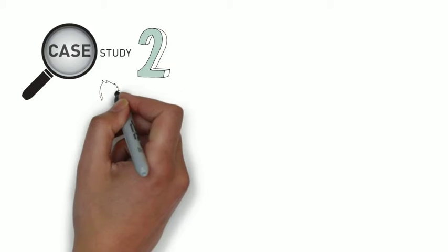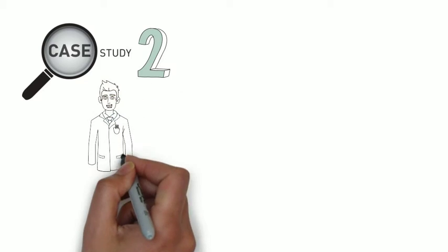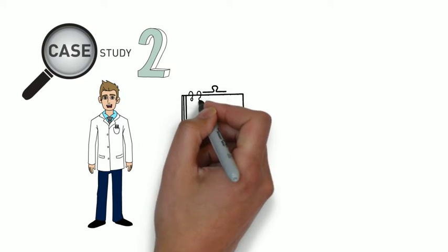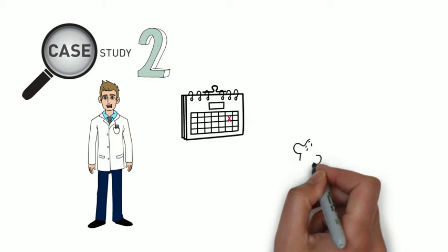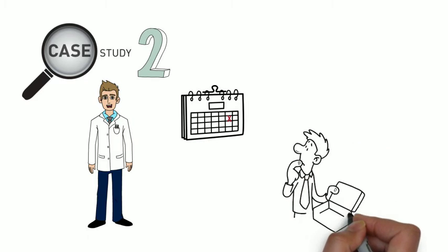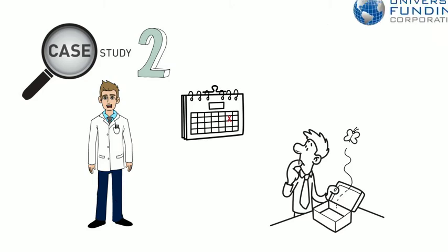Case study number two: A medical staffing company based in Raleigh, North Carolina, was nearing a payroll deadline and was low on cash. They turned to Universal Funding to quickly turn their invoices into cash.